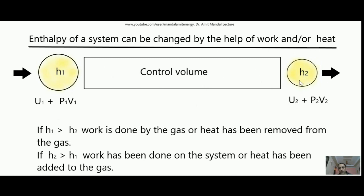In case H₁ is greater than H₂, it means enthalpy has been reduced. This means either work is done by the gas — because work needs energy, and by the expense of reduction in enthalpy the work has been done — or heat has been removed, because when heat is removed energy is reduced and enthalpy reduces. An example of work done by a gas is a gas turbine: the gas enters with higher enthalpy and by performing work on the turbine it comes out with lower enthalpy. Similarly, in a condenser the fluid goes inside as vapor, releases its heat, and condenses into liquid — since heat has been removed, enthalpy reduces.